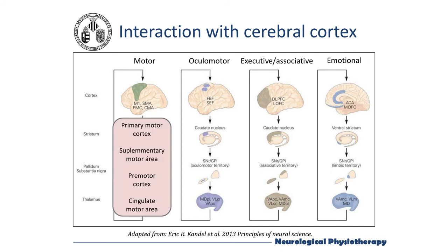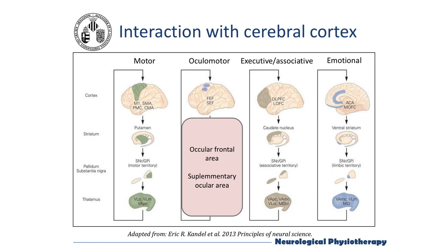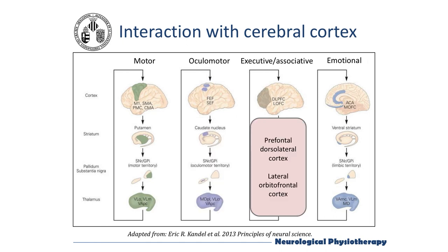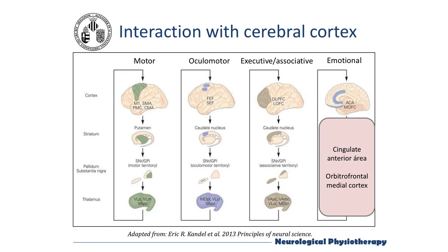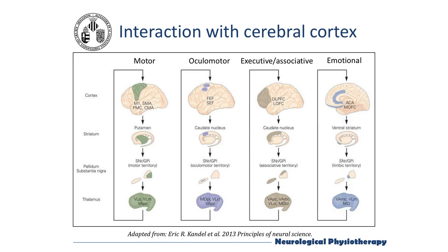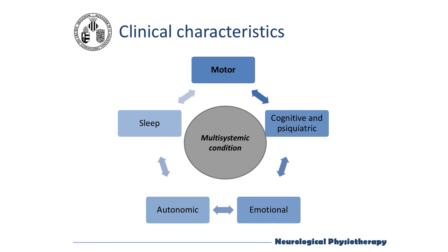The relationship of the basal ganglia with the cerebral cortex in the motor circuit is with the primary motor cortex, the supplementary motor area, premotor cortex, and cingulate motor area. The oculomotor circuit interacts with the oculofrontal area field and the supplementary ocular area. The executive associative circuit relates the basal ganglia to the prefrontal dorsolateral cortex and the lateral orbitofrontal cortex. In the emotional circuit, the basal ganglia are related to the anterior cingulate area and the orbitofrontal medial cortex. Therefore, Parkinson's disease has multisystemic characteristics, with patients suffering mainly from motor disorders but also from cognitive, psychiatric, emotional, autonomic, and sleep disorders.